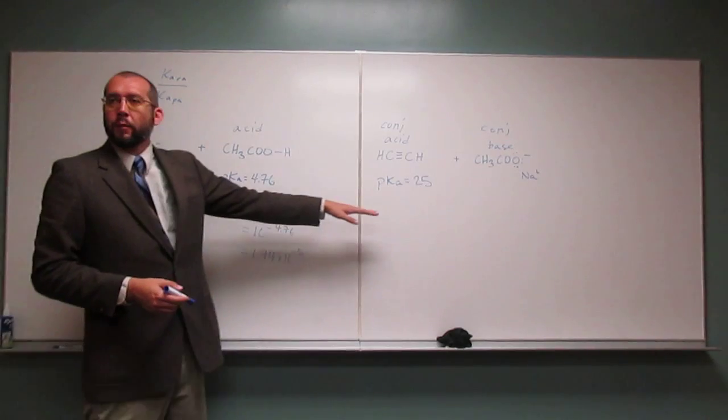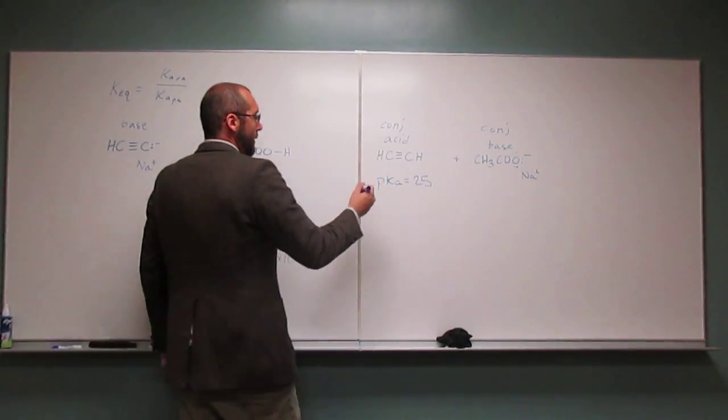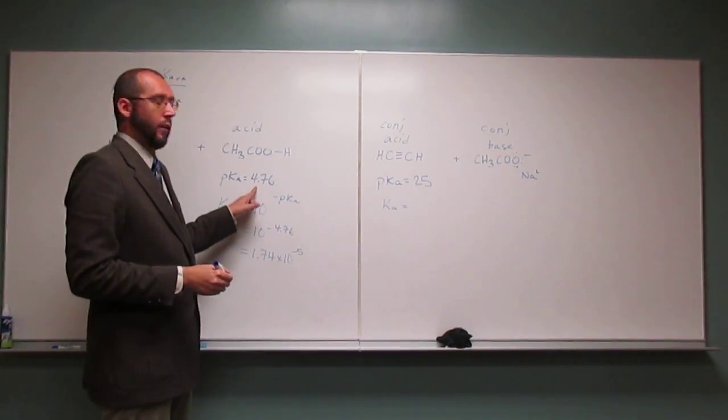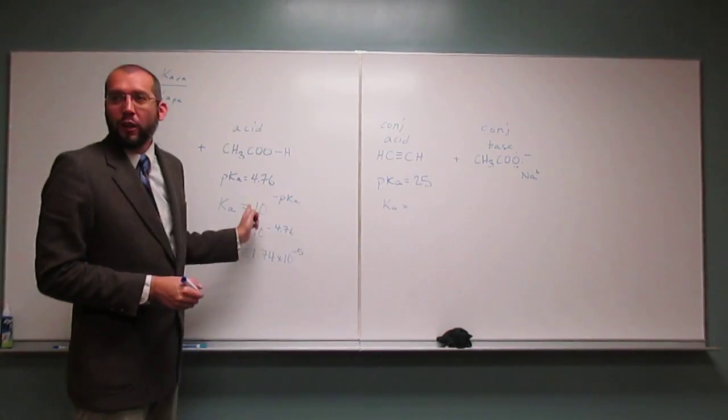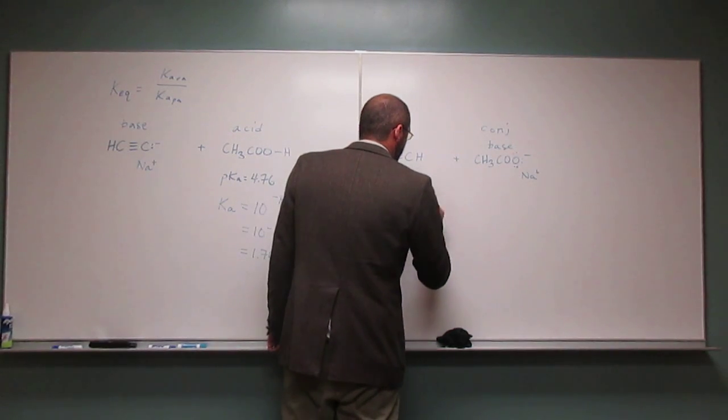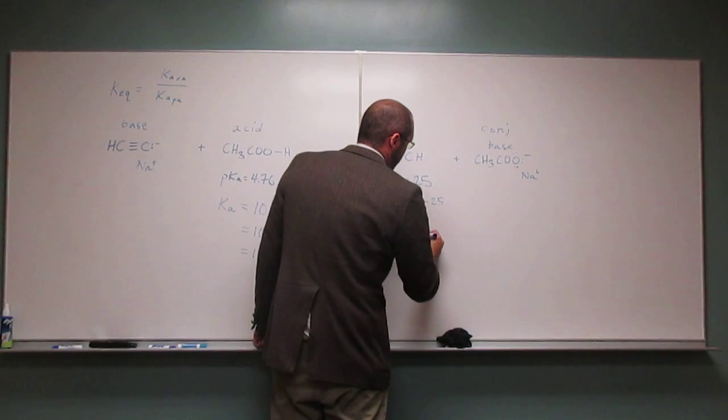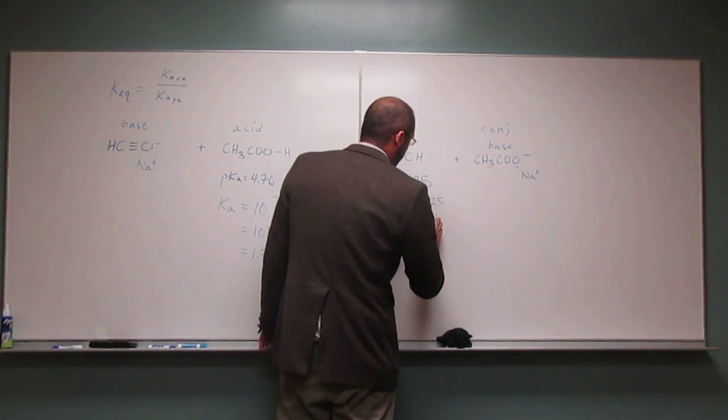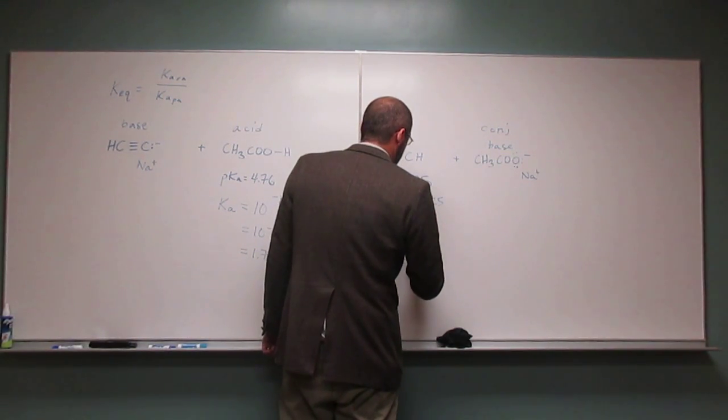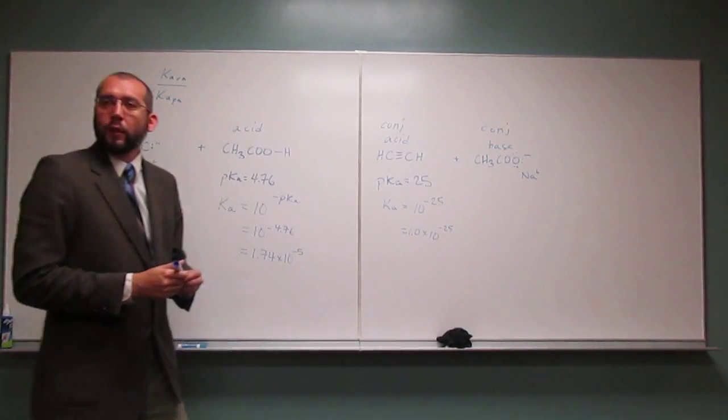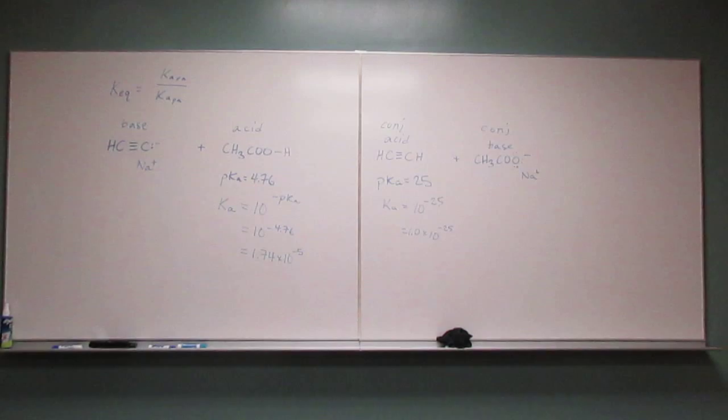So we want to do the same thing over here. This one's easier because it's an integer, not a non-integer. So 10 to the negative 25, we'll just write that as 1.0 times 10 to the negative 25. Any problems with that one?